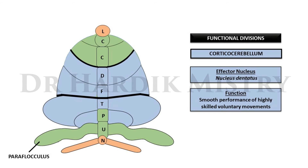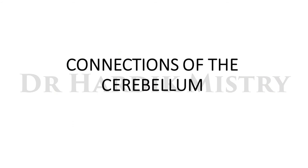The corticocerebellum includes the whole of the posterior lobe except pyramids, uvula, and paraflocculus. Its effector nucleus is the nucleus dentatus, and its function is smooth performance of highly skilled voluntary movements. The cerebellum has both afferent and efferent connections.